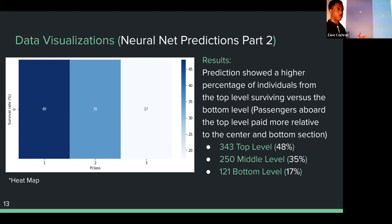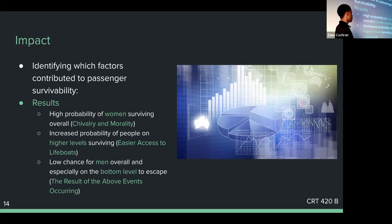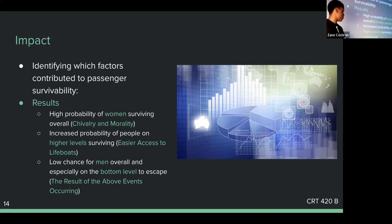The fact that people have to go up and out is a big factor. Theoretically, companies could try to design their vessels to have a quick way out for people on the second level to make things easier. The three main takeaways were: a high probability of women surviving overall, possibly a sign of chivalry; increased probability for people on higher levels due to easier access to lifeboats; and a low chance for men on the bottom levels to escape.